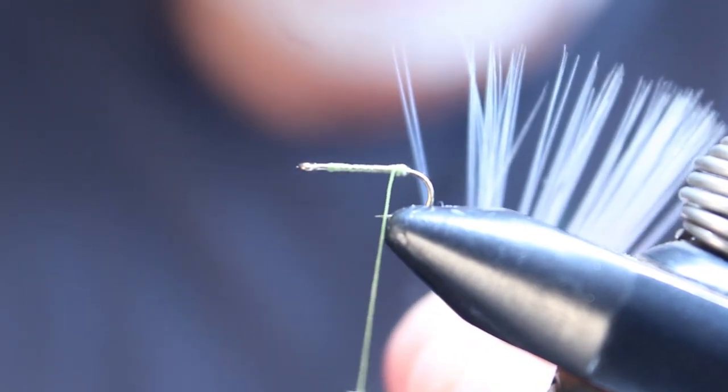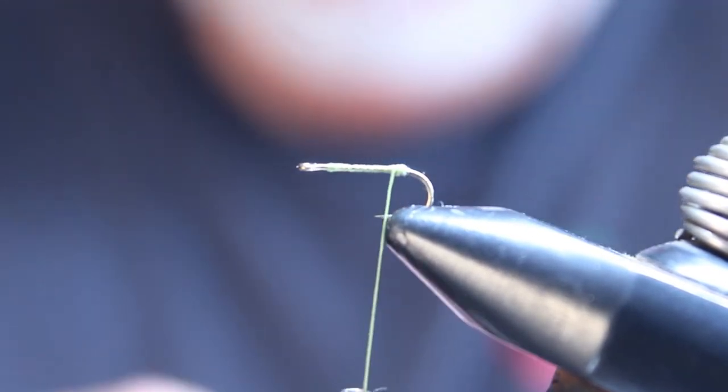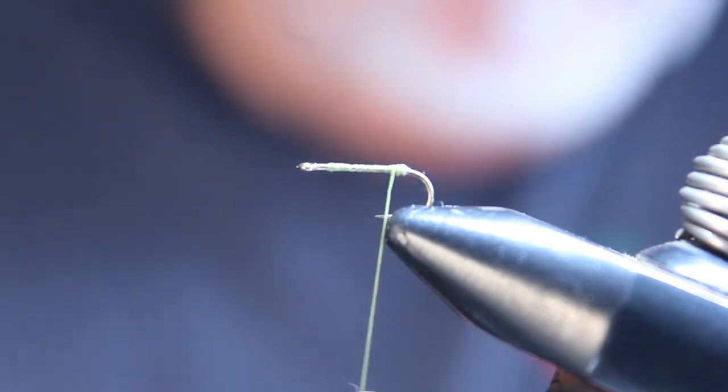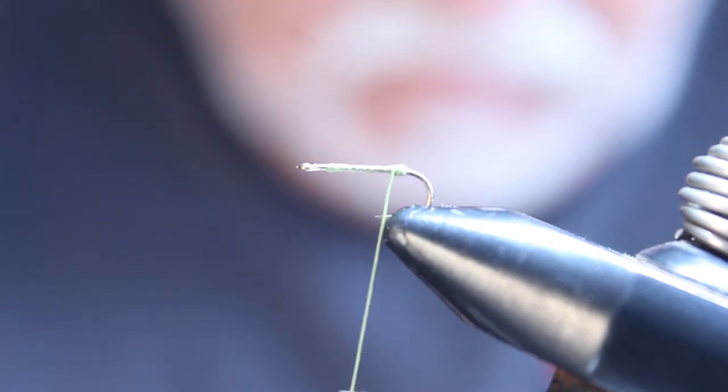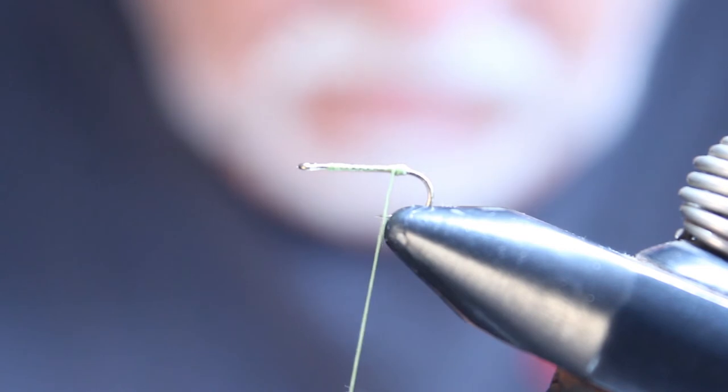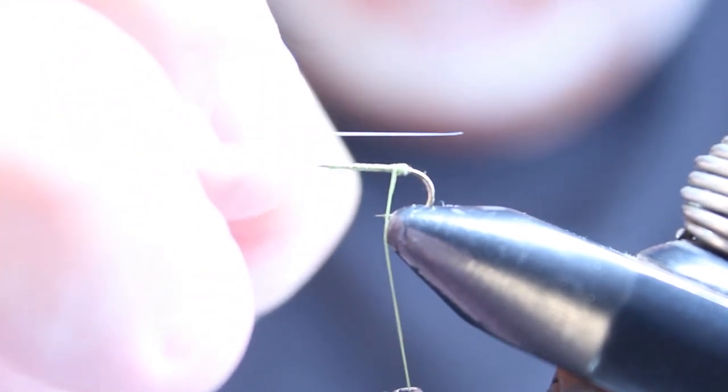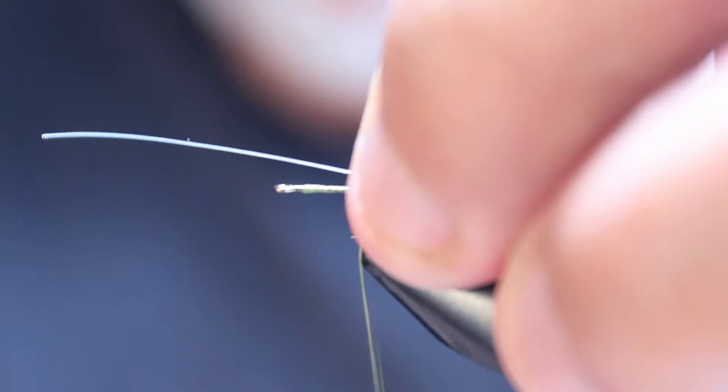We're going to be using barbettes, barbules, or whatever you want to call them. We'll take a couple and tie them in on the far side, close to you, about a shank length. Right there, we'll go for starters.